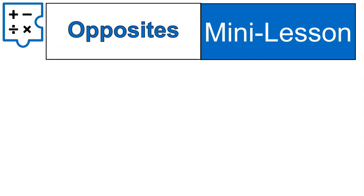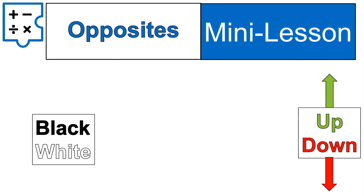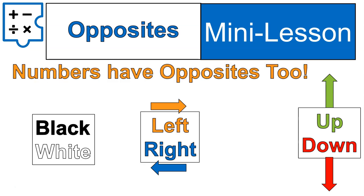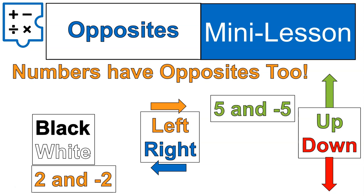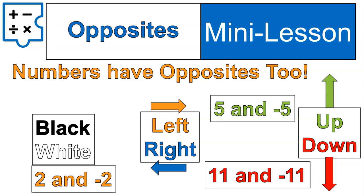First off, we need to talk about opposites. Black and white, up and down, left and right. But the thing is that numbers have opposites too. So when we're talking about opposites in math, we're not talking about opposites like up and down, left and right, black and white — we're talking about number opposites. Here are some examples: 2 and negative 2, 5 and negative 5, 11 and negative 11.